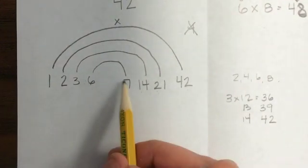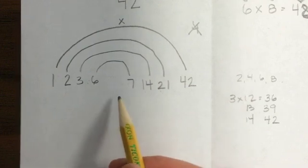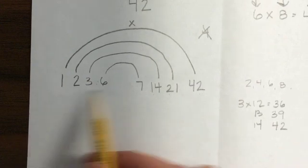Now I can look and I can say, is there anything between 6 and 7? No, they're one number apart. There's nothing between there. So that means that I have listed all of the factors that I needed to list for 42.